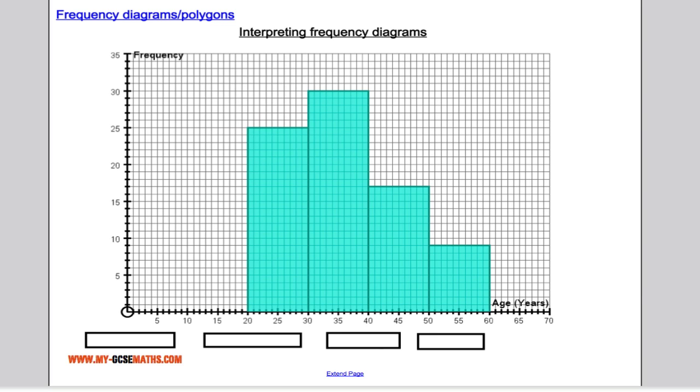What about interpreting frequency diagrams? What kind of questions could we be asked? Well, a possible question is what the modal class is. The modal class is going to be the bar that has the highest frequency. So the modal class is here, between 30 and 40.